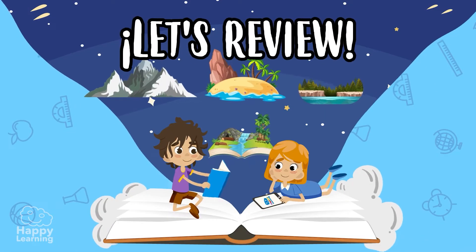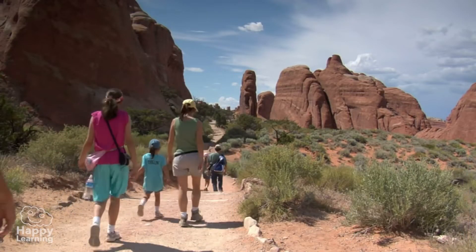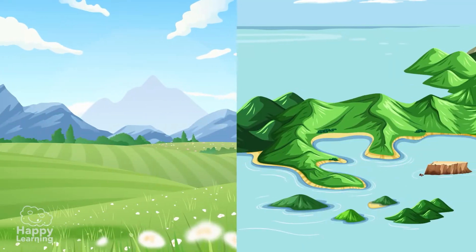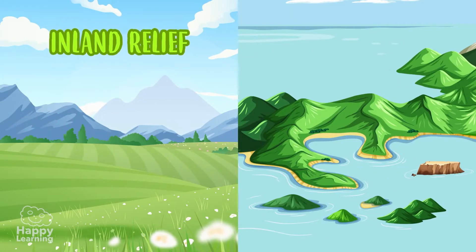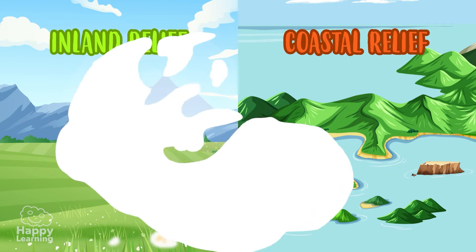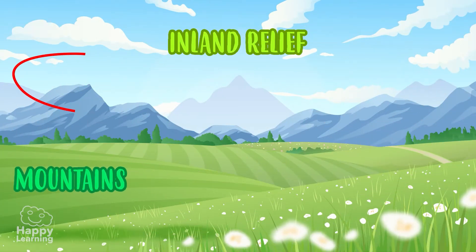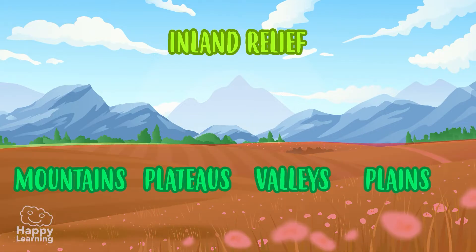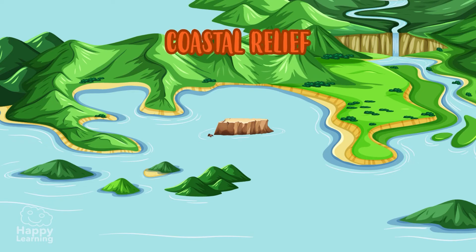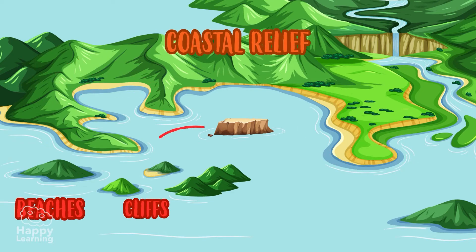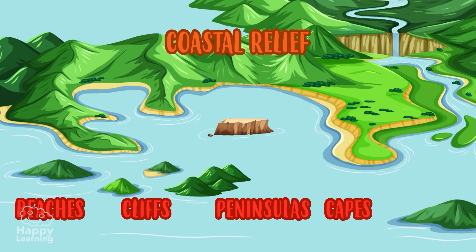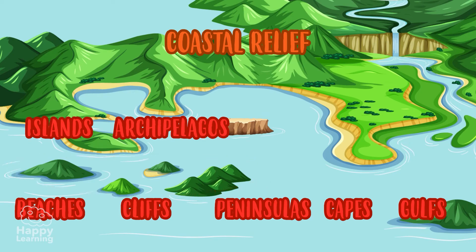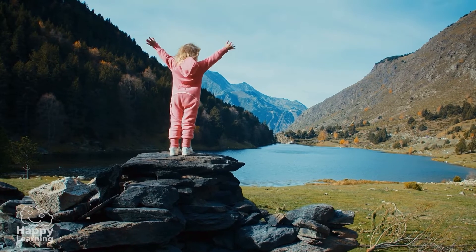Let's review what we have learned. Relief is the set of landforms on the Earth's surface. We can divide it into two groups: inland relief and coastal relief. Inland relief has mountains, plateaus, valleys, and plains. Coastal relief has beaches, cliffs, peninsulas, capes, gulfs, islands, and archipelagos. Have you noticed how varied our Earth's reliefs are?